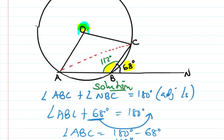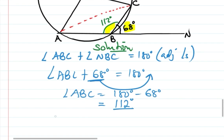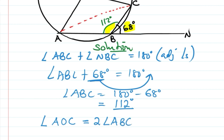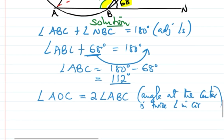We now have two angles formed. The angle at the circumference is 112 degrees. The angle at the center is twice the angle at the circumference. So the reflex angle AOC equals two times angle ABC.